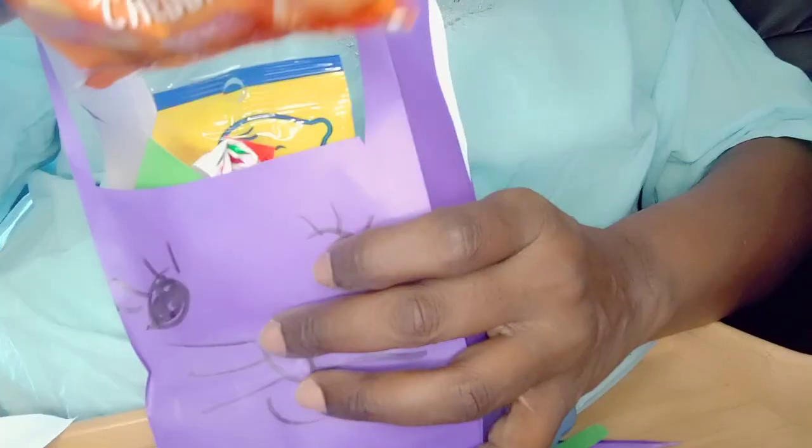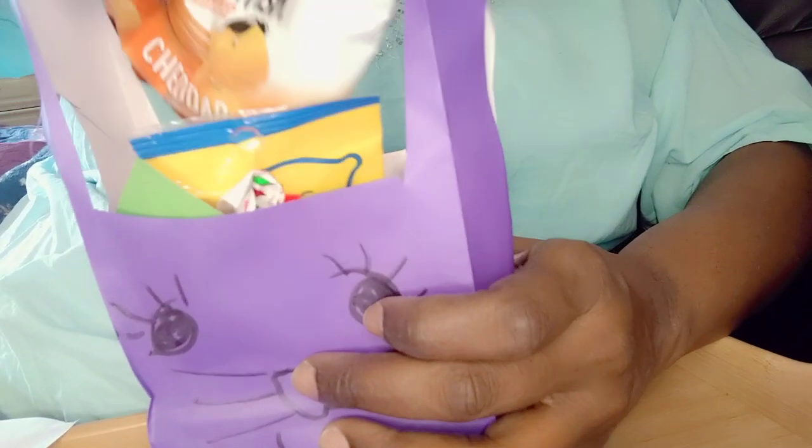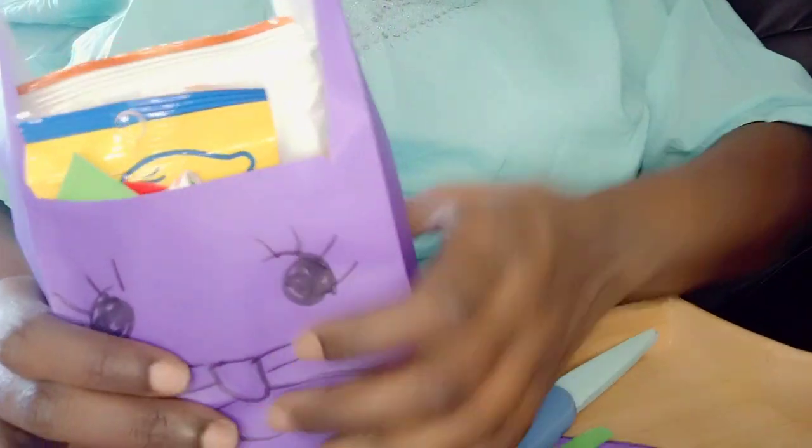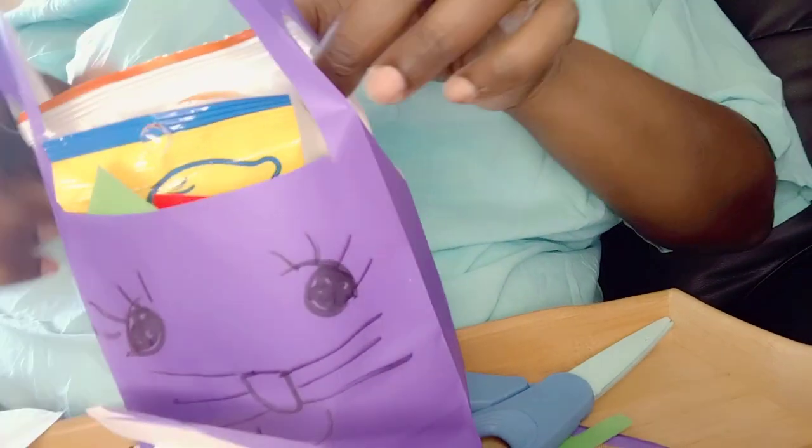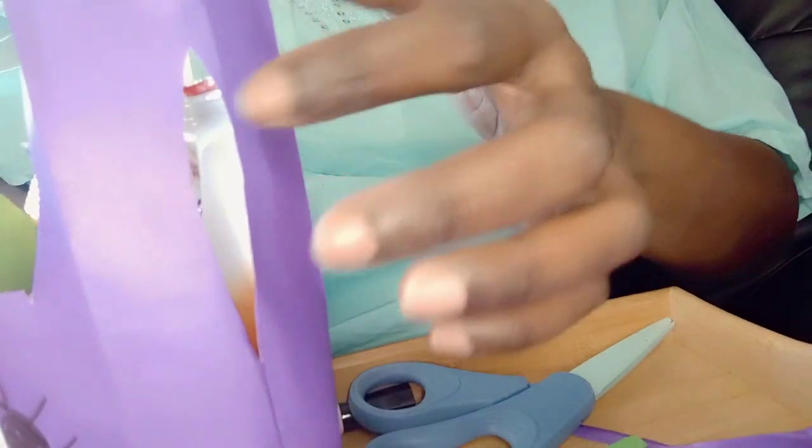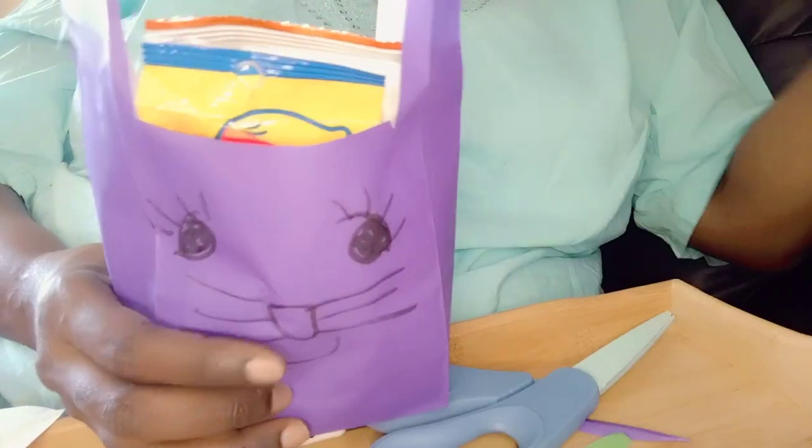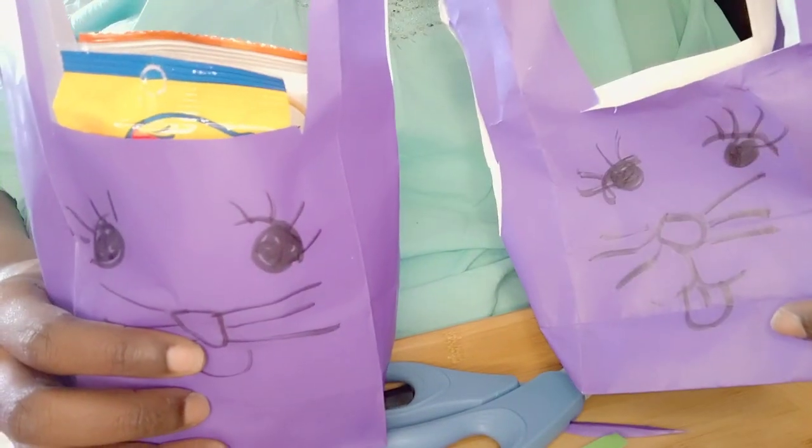And then you put the snacks in there like that and there you have it. You have this now. What you can do on the sides is put tape to hold it in place, put some tape on the sides to hold it in place. Yeah, maybe Easter Bunny. Alright, so thank you. Like, comment, subscribe. I love you guys, bye.